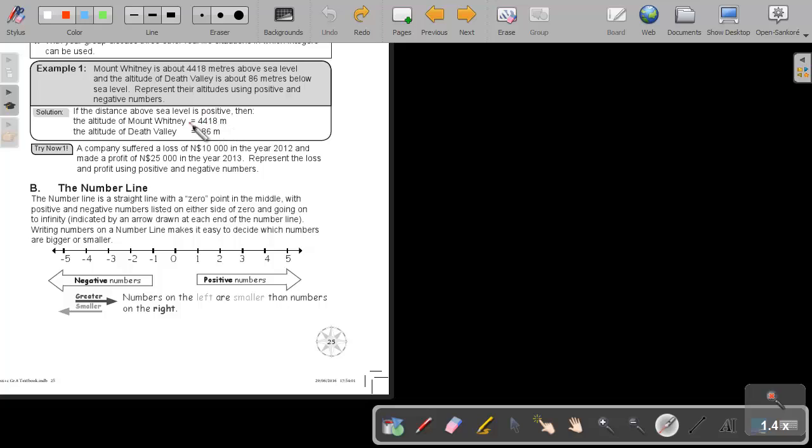Just take note, if it is a positive, we do not have to indicate the positive. So if there stands nothing, it is actually meaning it is a positive. The altitude of Death Valley is below sea level, and that is why we put a small negative in front of it.